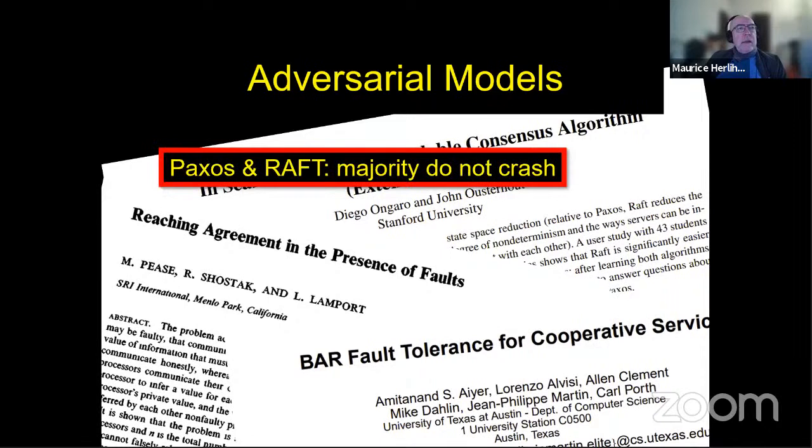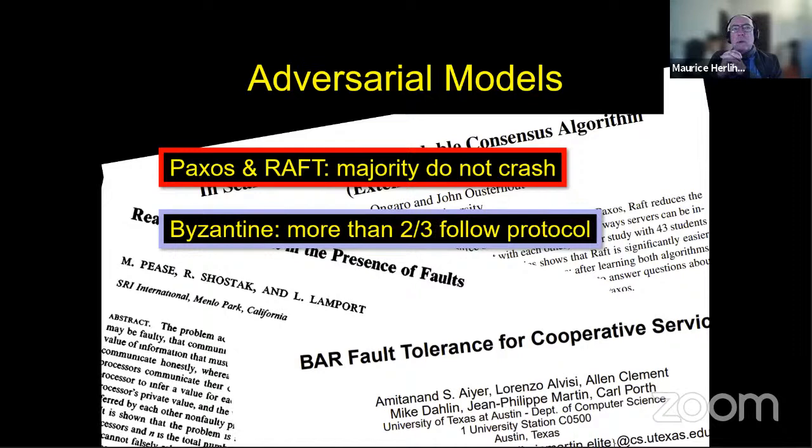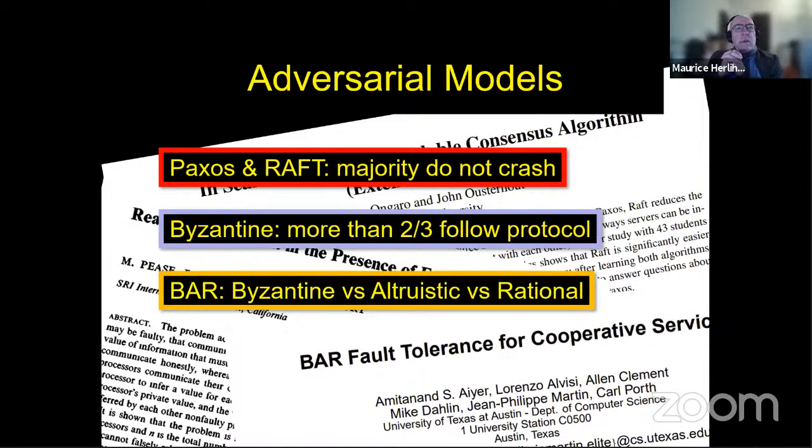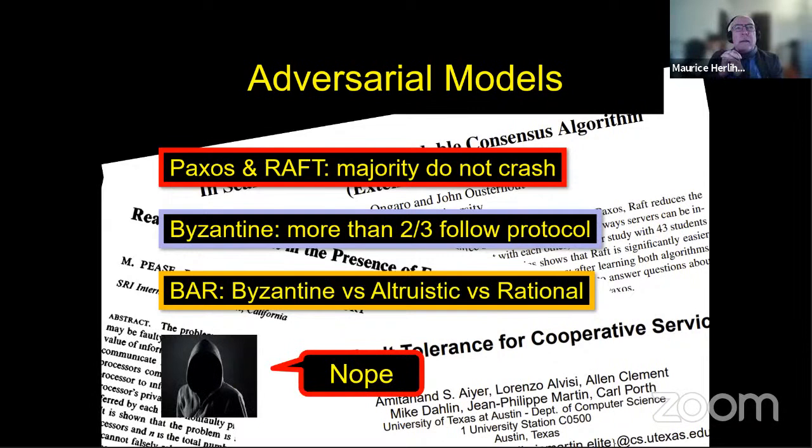And then there's some complication about partitions. Most Byzantine protocols say, well, we're fine as long as more than two thirds of the participants behave themselves. And sometimes two thirds is higher, depending on the specific protocol that you're looking at. There's very nice work on saying, well, splitting things into Byzantine versus well-behaved is naive. Sometimes we have Byzantine who misbehave, altruistic who always behave, and rational who behave if they're incentivized to do so. And what I want to argue is that none of these is really adequate for the kind of world that we need to be able to do this kind of adversarial commerce.